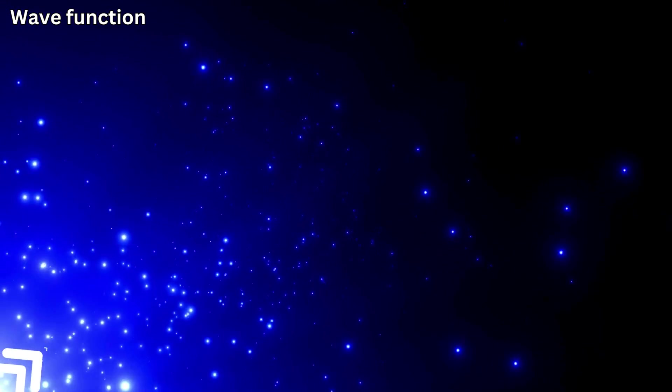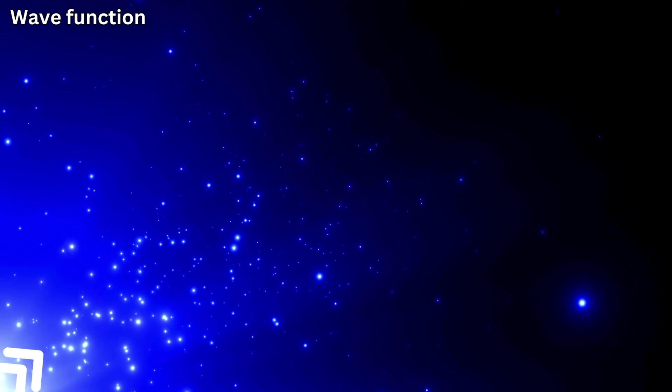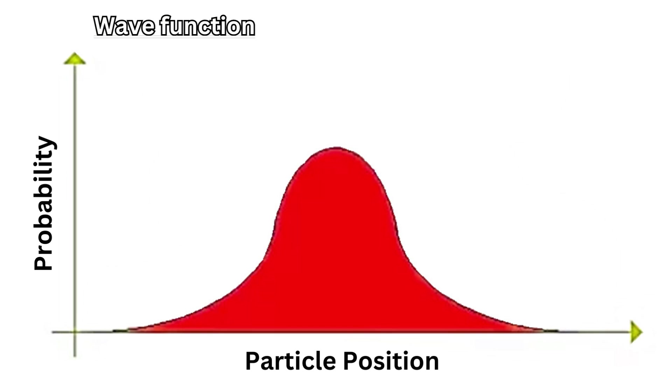So, instead of knowing exactly where these tiny particles will go, they use something called the wave function, which describes the probabilities of where the particles may actually end up going. In other words, where they can be found.